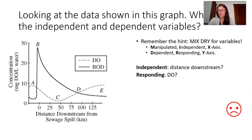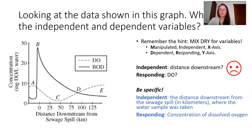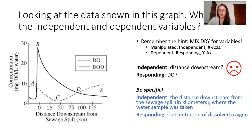We can get a lot more specific. Let's make the independent variable the distance downstream from sewage spill in kilometers where the water sample was taken, and the responding variable the concentration of dissolved oxygen. Now, could you get away with the other answers? Maybe, but do you want to chance it? If you can add succinct and concise clarification, do so. Just remember to keep an eye on the time as you do.